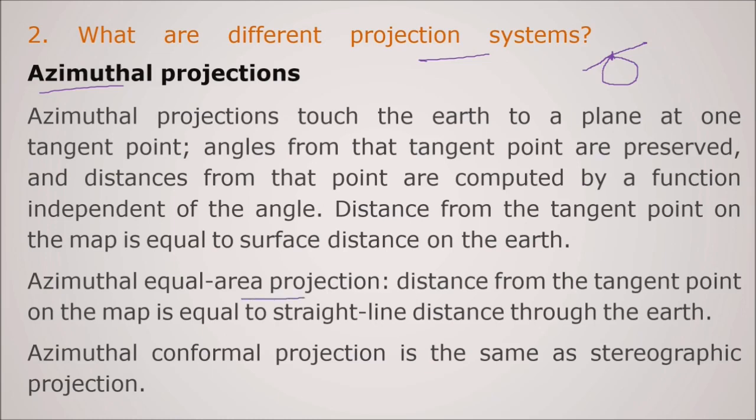Azimuthal equal-area projection is there - the distance from the tangent point on the map is equal to the straight line distance through the earth. And azimuthal conformal projection is the same as the stereographic projection.